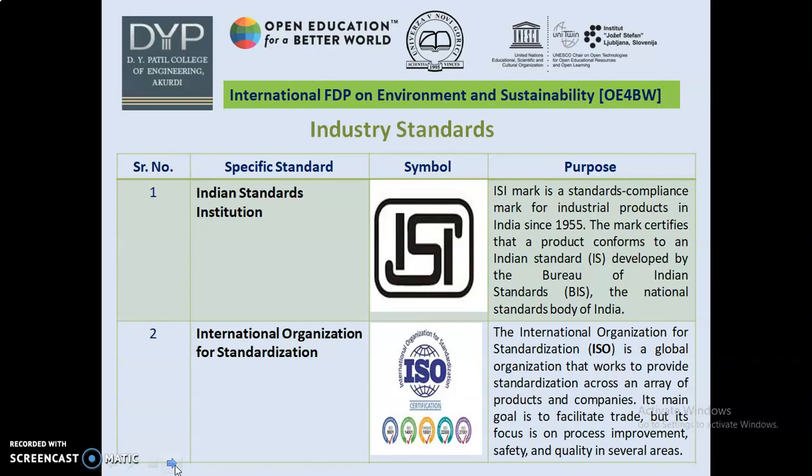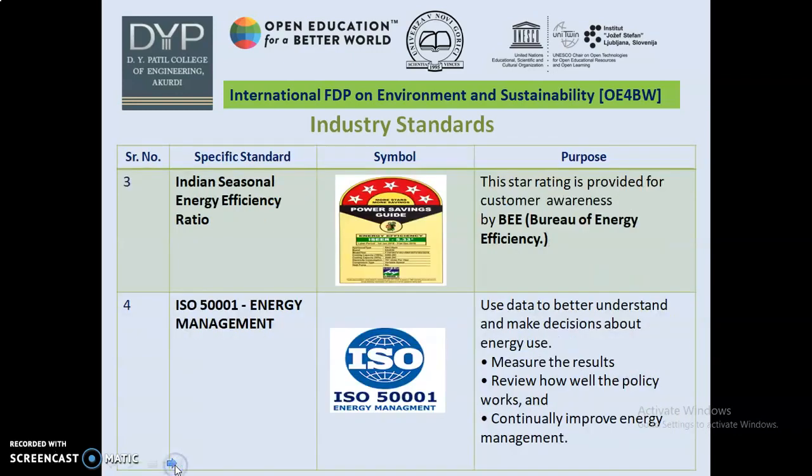The next standard is International Organization for Standardization, represented by ISO. ISO is a global organization that works to provide standardization across an array of products and companies. Its main goal is to facilitate trade, but its focus is on process improvement, safety and quality in several areas.